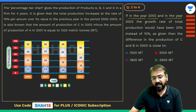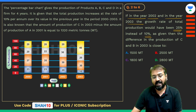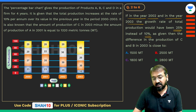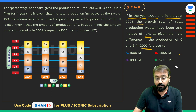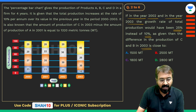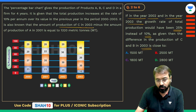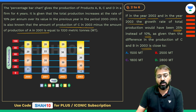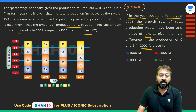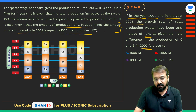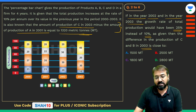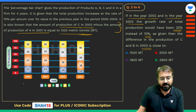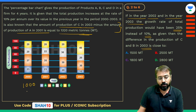The second question says: if in 2002 and 2003 the growth rate of total production would have been 25% instead of 10%, then the difference in production of C and B in 2003 is close to how many million tons? We'll have to use the given data that production of C in 2003 minus production of A in 2001 equals 130 MT. The only thing that changes is the 10% growth rate becomes 25% for those years.